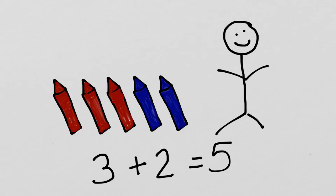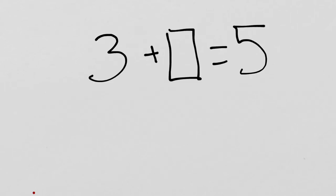But that's not how the problem started. The problem started like this. We knew that Steve had five crayons in all, and we knew that three of them were red. And then the question was, how many were blue? So we knew that 3 + something was going to be 5.